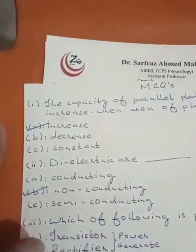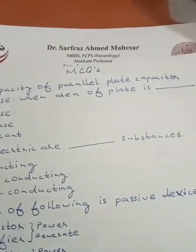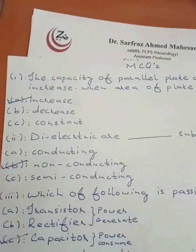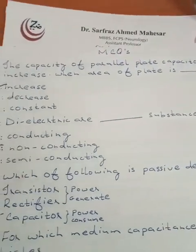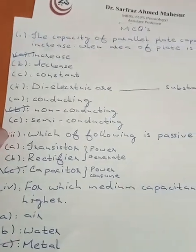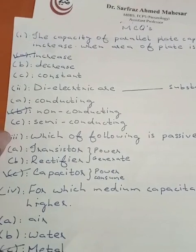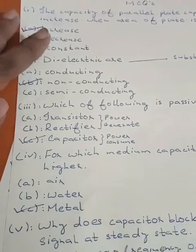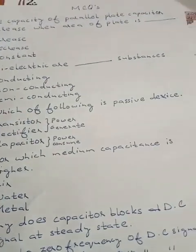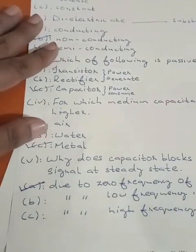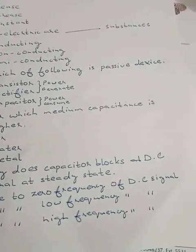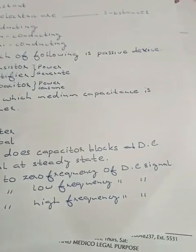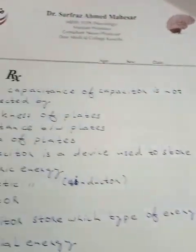Ab saari MCQs jo maine abtak key points padhe the: the capacitance of a parallel plate capacitor increases when the area of plate is increased or a dielectric substance is used. Which of the following is a passive device? Capacitor, because it consumes power. For which medium is capacitance higher? Of course, metals — always higher. Why does a capacitor block DC signal at steady state? Correct answer: due to zero frequency of DC signal.